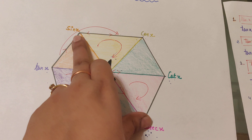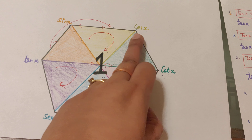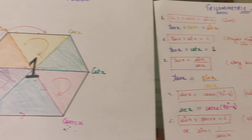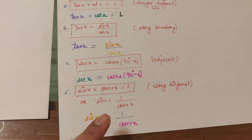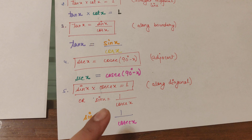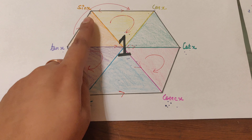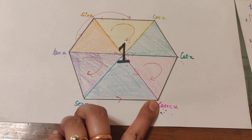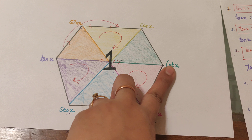The third identity is along the boundary without jumping: tan x = sin x / cos x. Similarly, sin x = cos x / cot x, cot x = cos x / sec x, and it continues like this along the boundary.